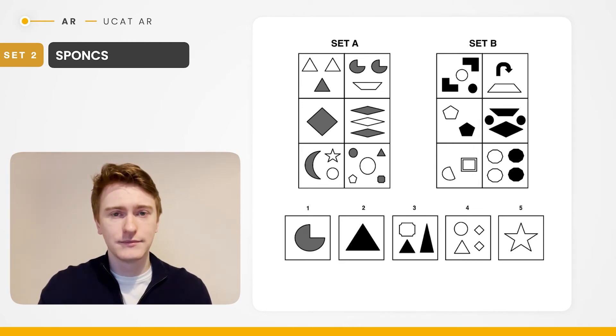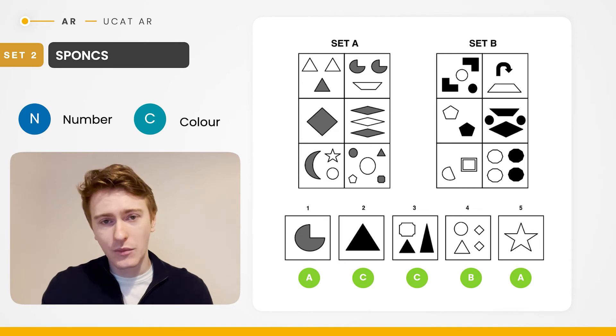So let's go through the answers. You can see that test shape one belongs to set A. It's an odd number, there's only one of them, and it's grey, so therefore it fits the criteria to go into set A.